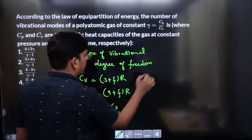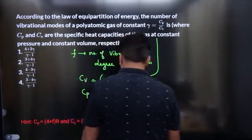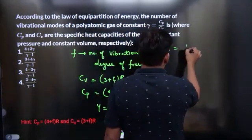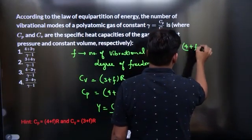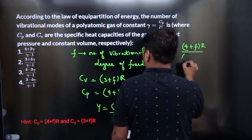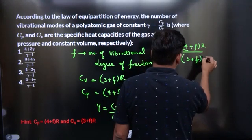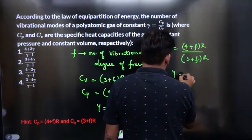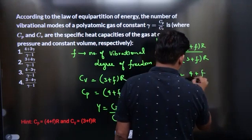It is also mentioned in the question. So gamma would actually be 4 plus F into R divided by 3 plus F into R. Now gamma would be 4 plus F divided by 3 plus F.